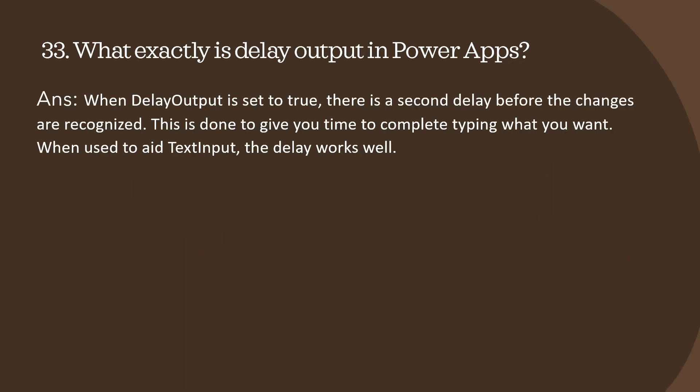Question 33: what exactly is delay output in Power Apps? When delay output is set to true, there is a one-second delay before changes are recognized. This is done to give you time to complete typing. When used with a text input control, the delay works well.